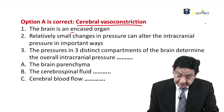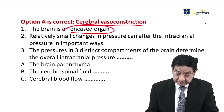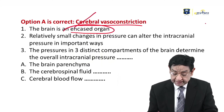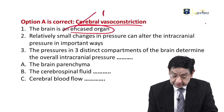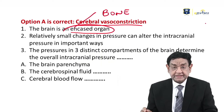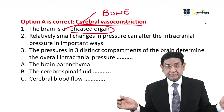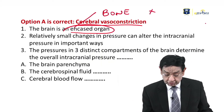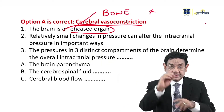The brain is an encased organ. It is totally closed, enclosed by the bones — that is the skull. And there is no place for expansion. It is totally encased.